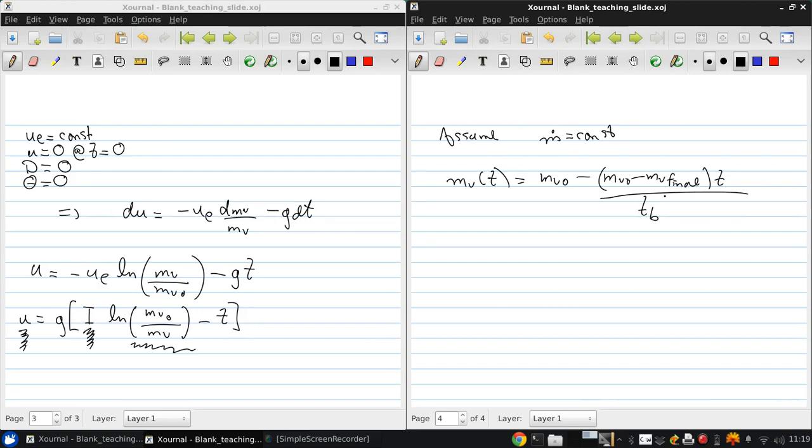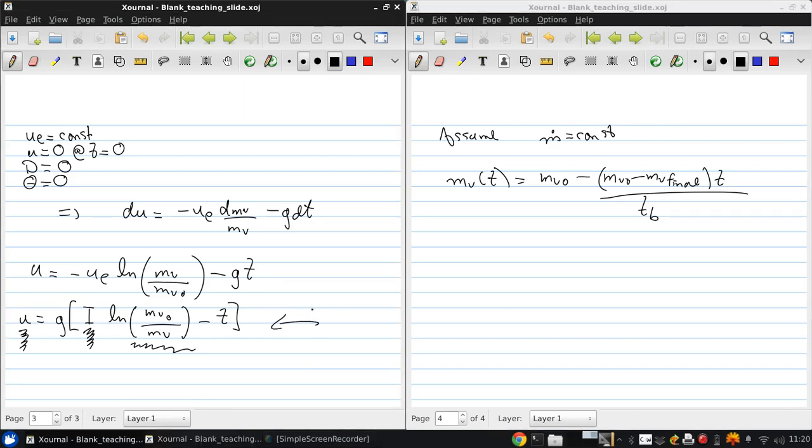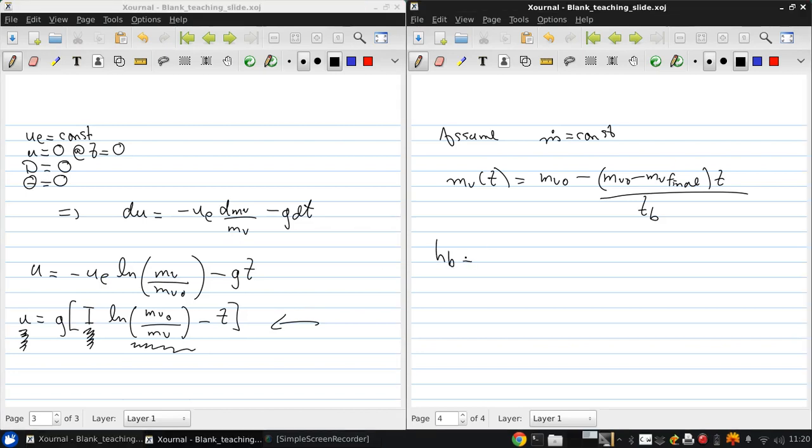Putting this equation into the expression for velocity here and integrating gives the height at the end of the burn. So the height at burnout is the integral from zero to the burnout time of the v dt for our vertical flight rocket.